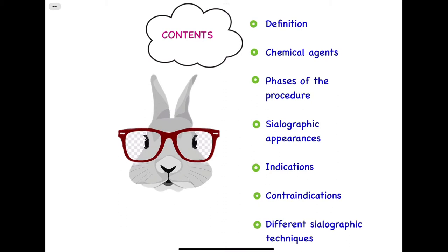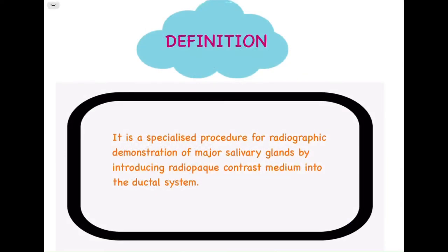By definition, sialography is a specialized procedure for radiographic demonstration of major salivary glands by introducing a radiopaque contrast medium into the ductal system. This technique is largely limited to our major salivary glands because the minor salivary glands are very small, making it difficult to locate them or inject contrast media into them.